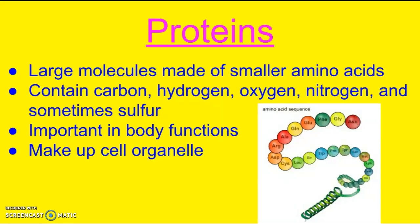The third group is proteins. They're large molecules made of smaller amino acids. Here you can see these individual balls are amino acids, and a protein is made up of all these different amino acids. Depending on the sequence, it could be different — every amino acid sequence gives you a different protein. They contain carbon, hydrogen, oxygen, nitrogen, and sometimes sulfur. Proteins are really important in body functions. An example of a protein would be enzymes, and they also make up cell organelles.